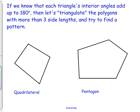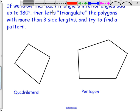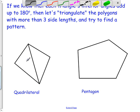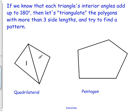Let's look at a couple. If we know that each triangle's interior angles add up to 180 degrees, then let's triangulate the polygons with more than three sides and try to find a pattern. What I mean is I'm going to take this quadrilateral and I'm going to cut it from one corner to the other. And what I did was by doing that, I created two triangles here. One right here and one right here.